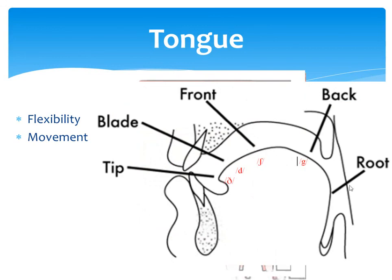Moving the tip of the tongue against the alveolar ridge, we can produce sounds like /t/. Moving the blade of the tongue against the hard palate, we can produce sounds like /d/. Moving the front of the tongue against the hard palate, we can produce sounds like /sh/.